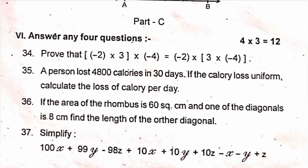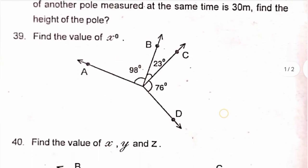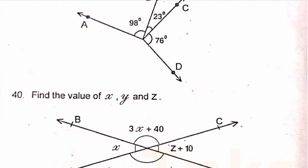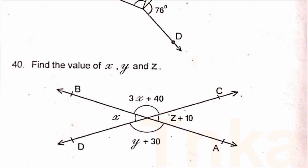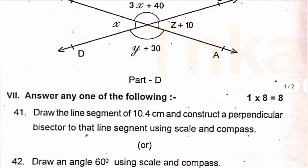Question 38: the shadow of a pole with height 8 meters is 6 meters; if the shadow of another pole measured at the same time is 30 meters, find the height of that pole. Question 39: find the value of x degrees in the given figure. Question 40: find the value of x, y, and z — using the equation 3x plus 40y plus 30, solve for the values of x, y, and z.